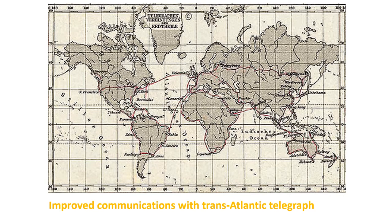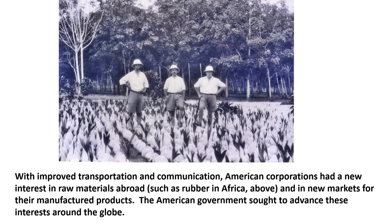During the Progressive Age, you see improved communications with transatlantic traffic — insulated telegraph wires across the oceans, which soon gave way to wireless communication. Transportation and communication out of the Industrial Revolution was just making the world smaller. American businesses were looking for new markets and also new raw materials, such as rubber in Africa. The U.S. government wanted to encourage American business, so they sought to use the power of government to advance the interests of Americans around the globe.